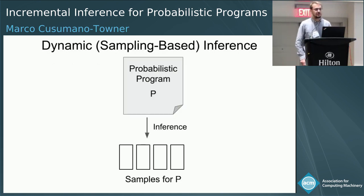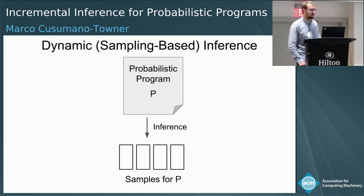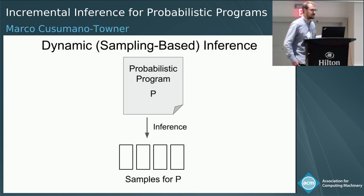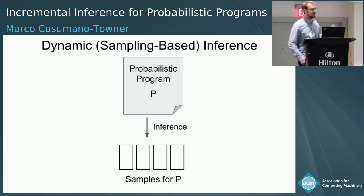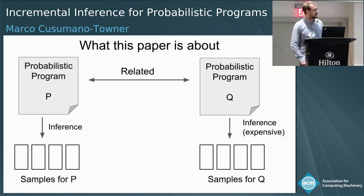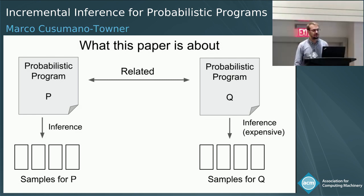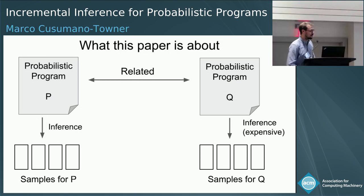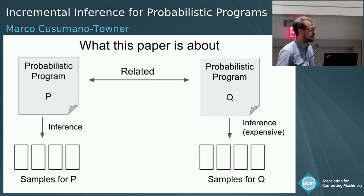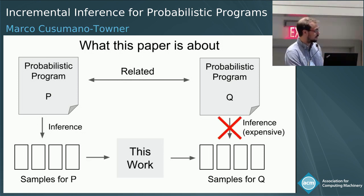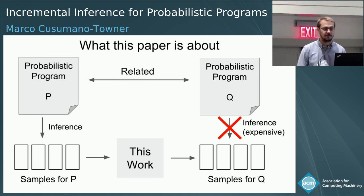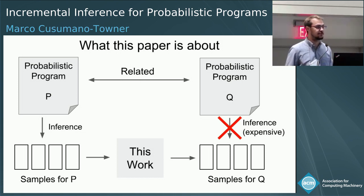This talk is concerned with making dynamic or sampling-based inference more efficient. In dynamic sampling-based inference, we start with a probabilistic program, apply an inference algorithm, and the algorithm gives us a set of samples that characterize the probability distribution represented by the program. This paper considers a setting where we have two probabilistic programs P and Q that are somehow related. If we've already done inference for P and obtained a collection of samples, can we convert those samples directly into samples for Q without doing inference from scratch?